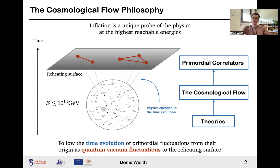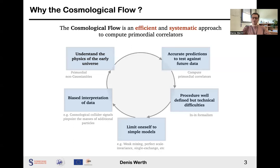And because the physics is encoded in the time evolution of primordial correlators, the philosophy of the cosmological flow is to follow the time evolution of these primordial fluctuations, from their origin as quantum vacuum fluctuations during inflation to the reheating surface. This way, the cosmological flow is a formalism to go from theories of the early universe to primordial correlators that can be directly tested against the data.